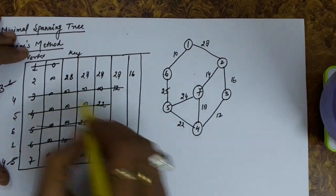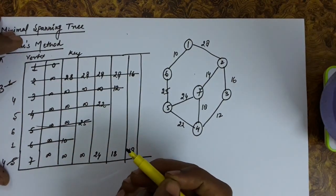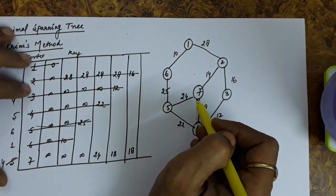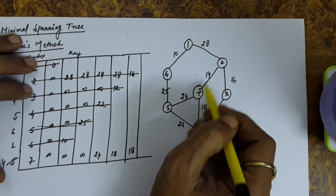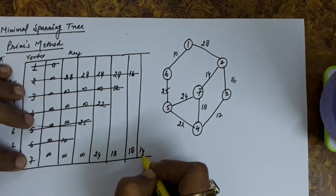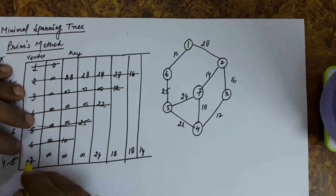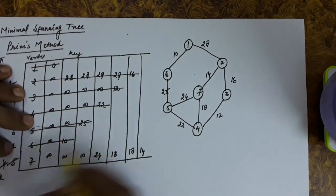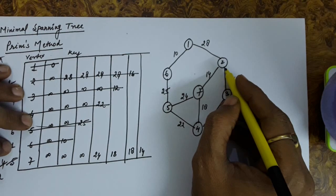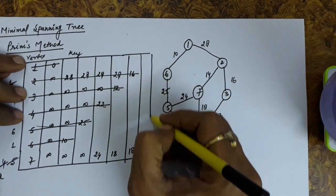Out of 16 and 18, we delete the smaller value, which is 16 — vertex number 2. From vertex 2: connection to 1 is deleted. Connection to 7 has cost 14, which is less than the current key of 7 (18), so we update the key of 7 to 14. The predecessor of 7 is updated to 2. Connection to 3 — vertex 3 is already deleted.